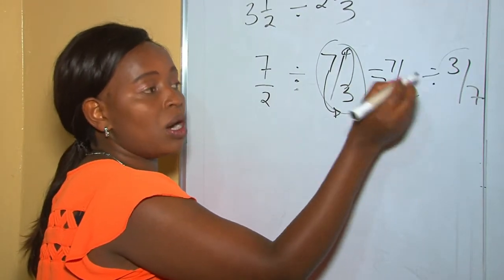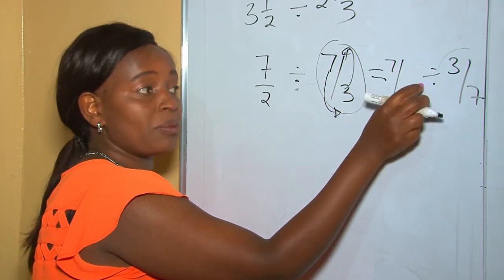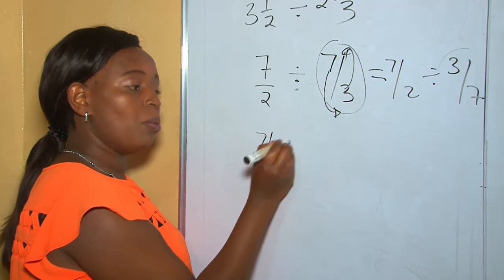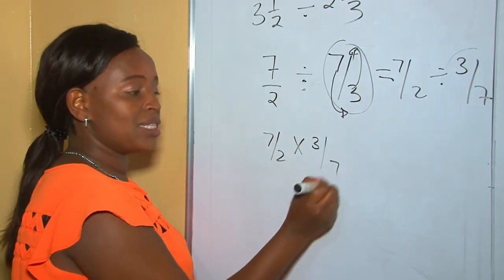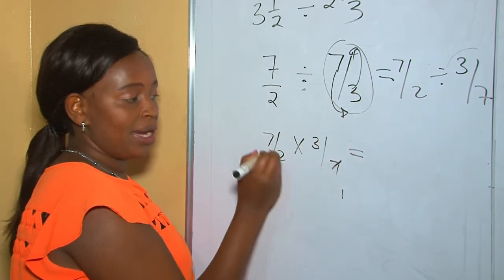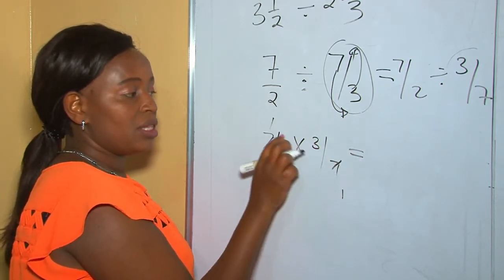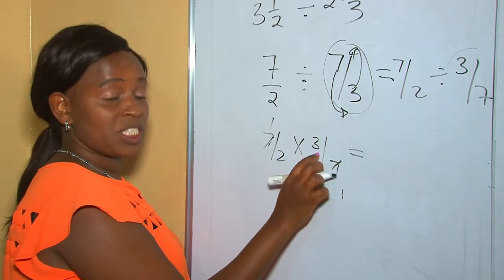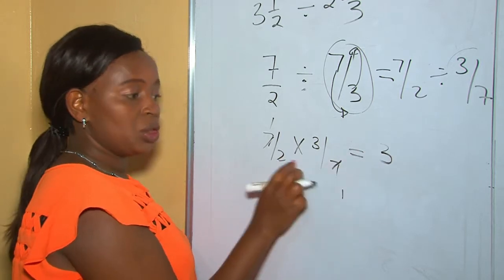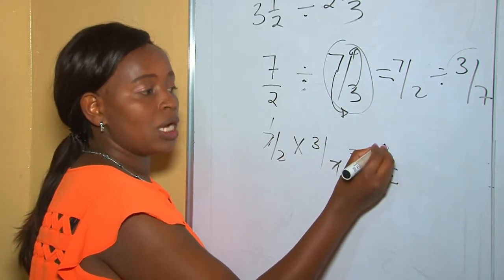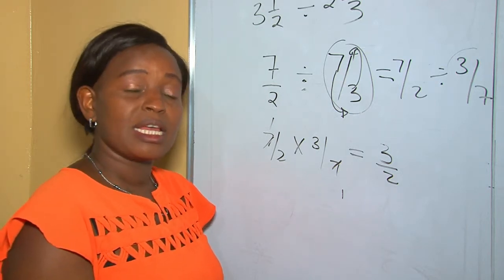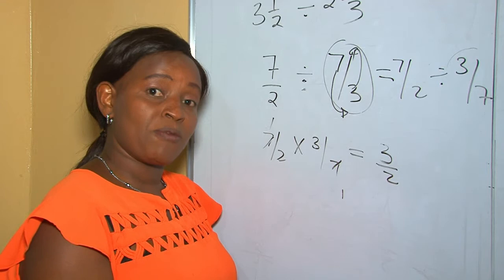Once we get the reciprocal, the rule changes from division to multiplication. So it becomes 7 over 2 multiplied by the reciprocal, which is 3 over 7. We can cross-cancel: 7 by 7 gives 1 by 1. 3 and 2 don't have a common factor, so 1 times 3 is 3 and 2 times 1 is 2.